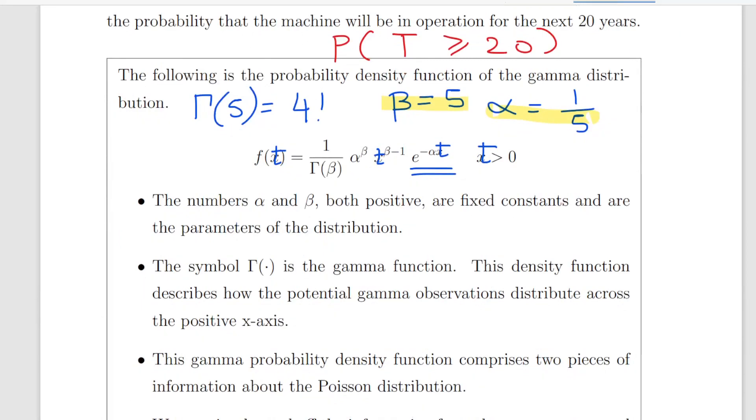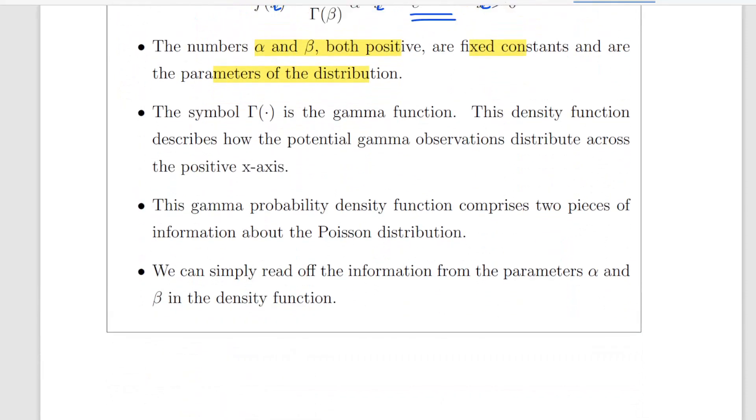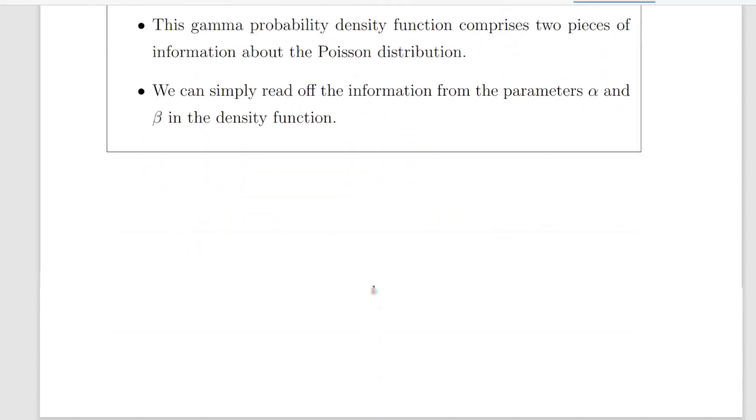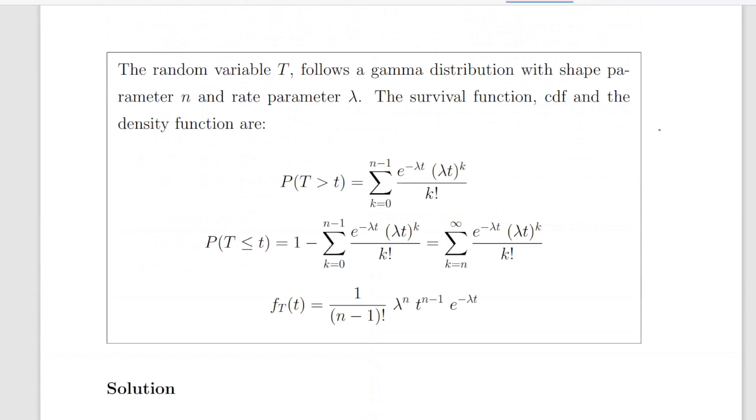Now typically we would parameterize the gamma distribution using shape parameters, scale parameters, or rate parameters. I won't go into that yet, but just suffice to say that the numbers alpha and beta, both positive, are fixed constants and parameters of the distribution.